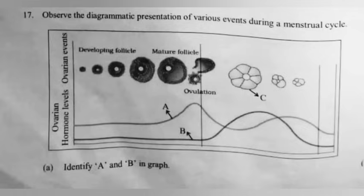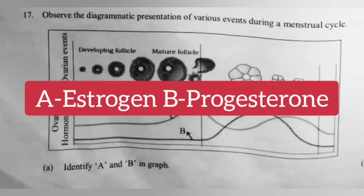Question 17: Observe the diagrammatic presentation of various events during a menstrual cycle. Identify A and B in the graph. Answer: A — Estrogen, B — Progesterone.